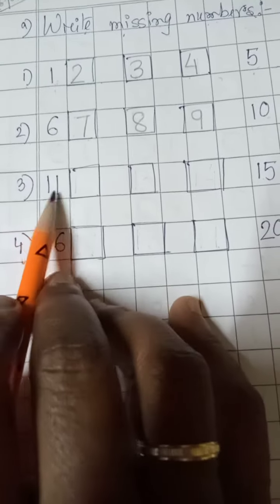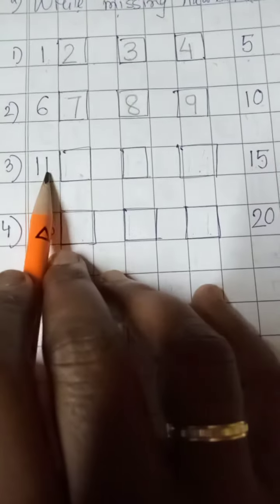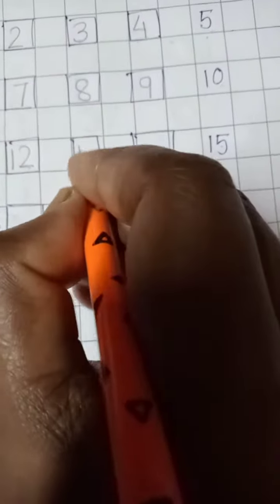Now next one, number three is: eleven, twelve, thirteen, fourteen, and fifteen. So you have to write the missing numbers: eleven, twelve, thirteen, fourteen, and fifteen.